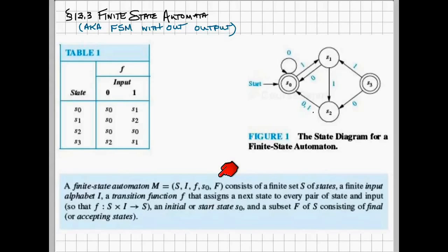So compared to a finite state machine with output, we do not have our output alphabet or our output function G.